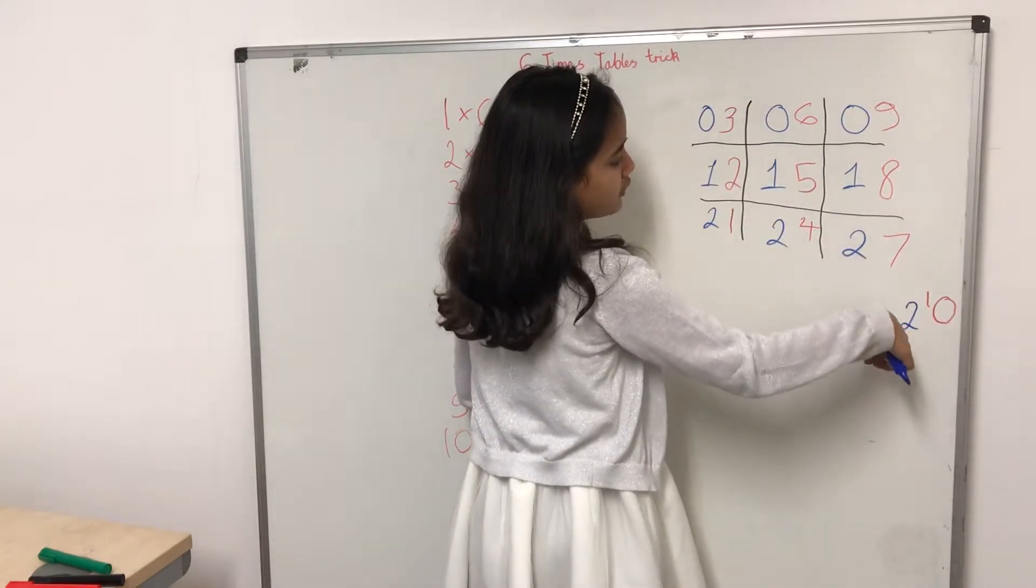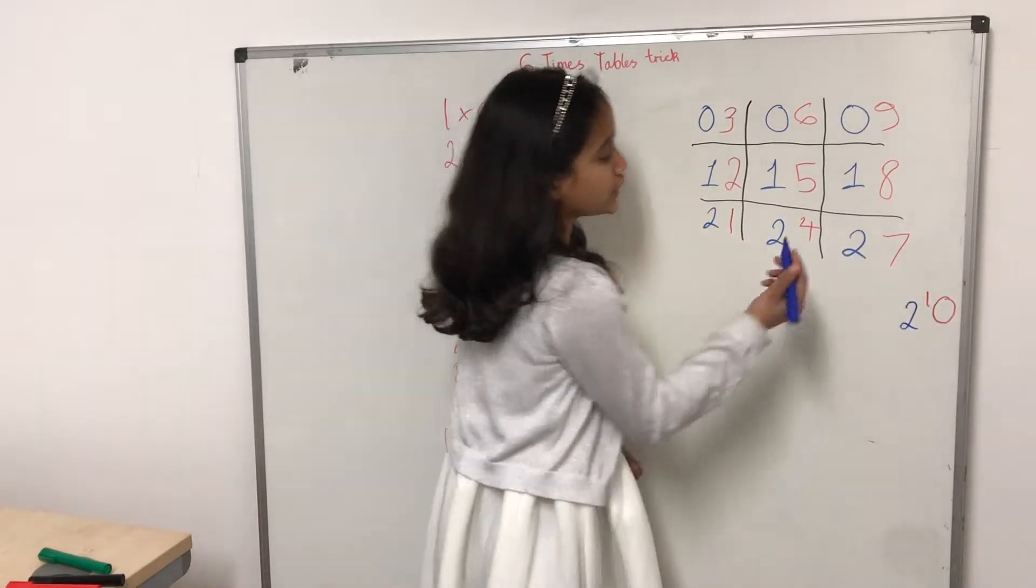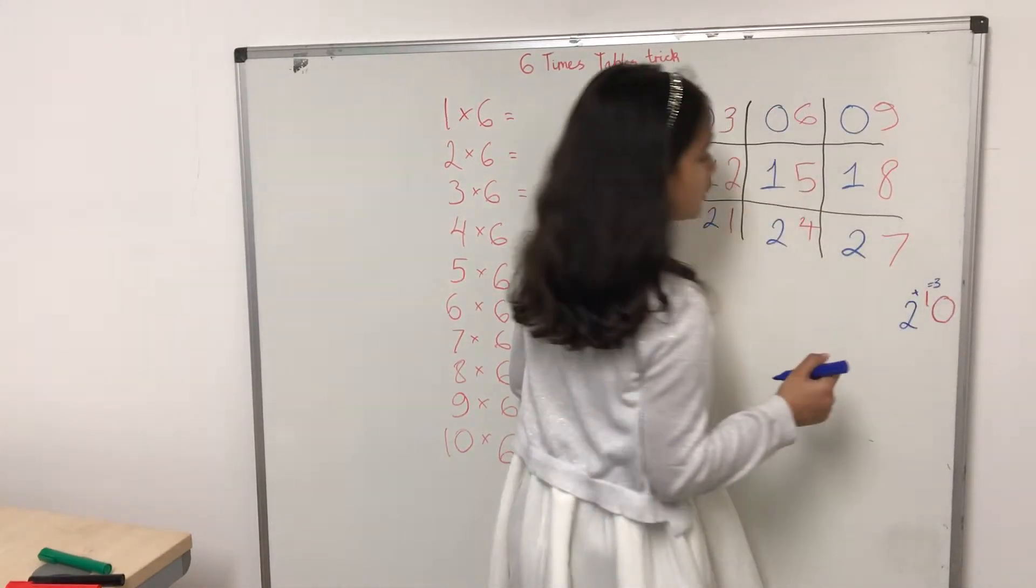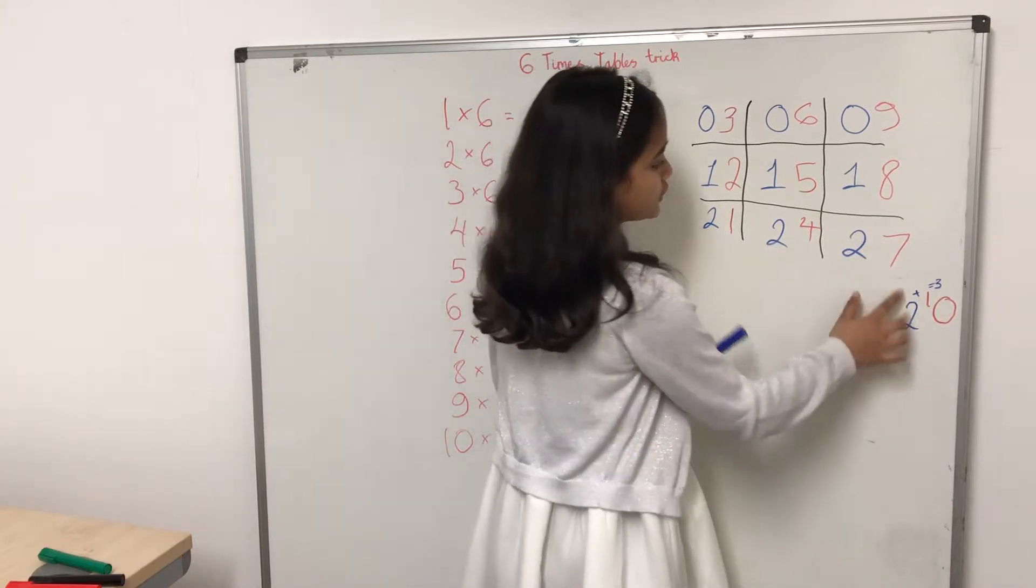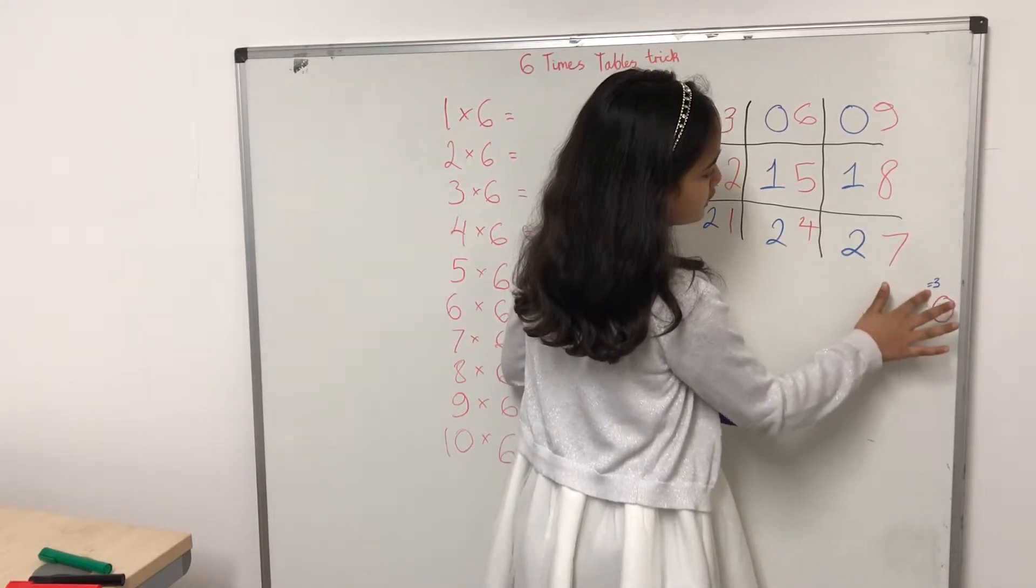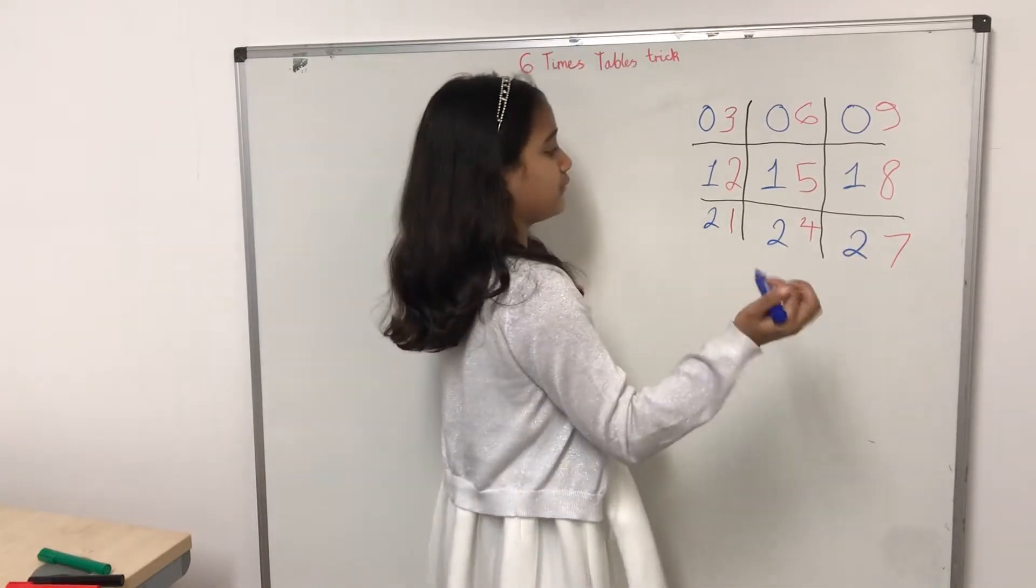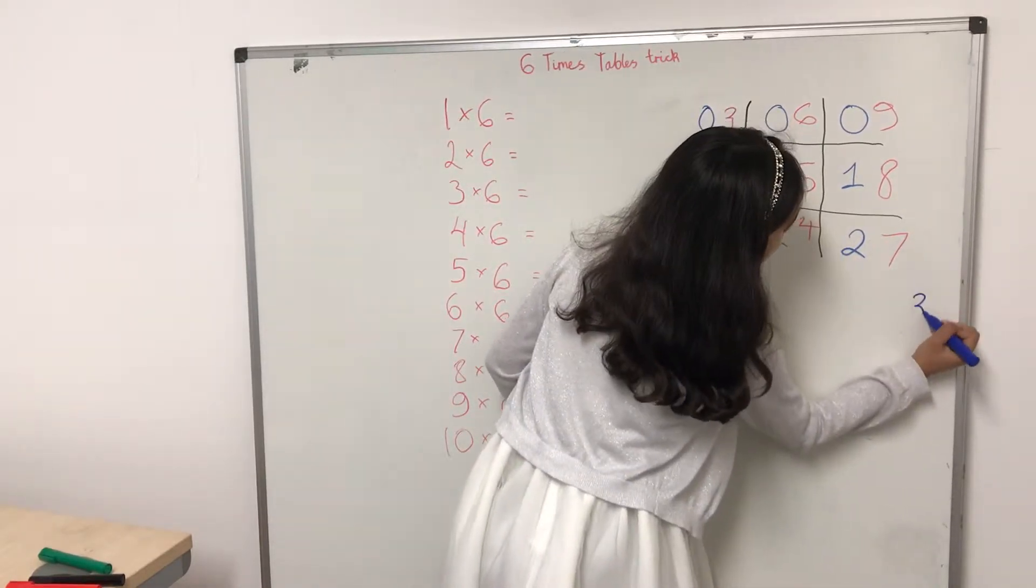But we can't leave our number like this, otherwise no one will understand. So, we're going to do two and one to get rid of these two numbers. We've done two and one, which equals three. So, we've got rid of these numbers. And that gives us thirty. Our leftover is thirty. So, I'll put it in here.